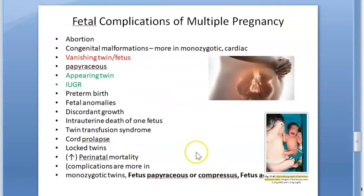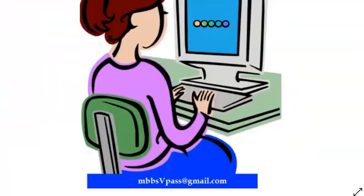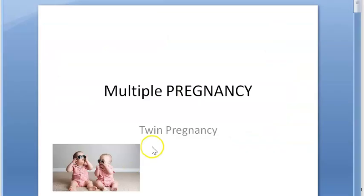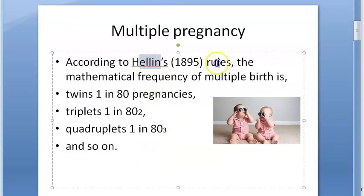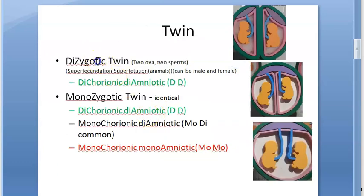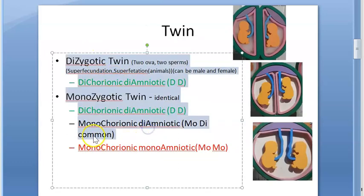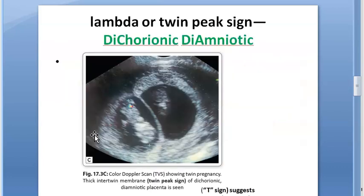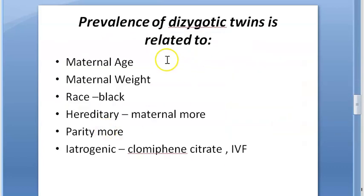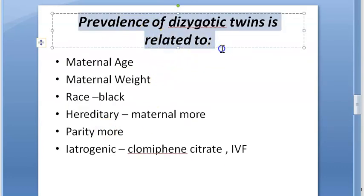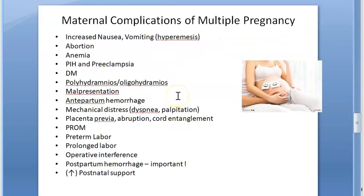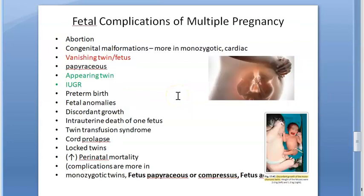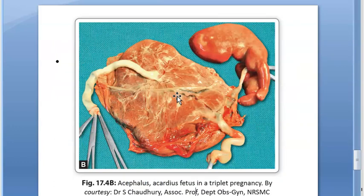In this video we covered multiple pregnancy, Hellin's Rule, and the types of twins with diagrams. In the next video we will continue with why twins happen, the reasons for multiple pregnancy, and complications of multiple pregnancy for both the mother and the fetus.